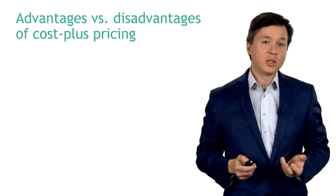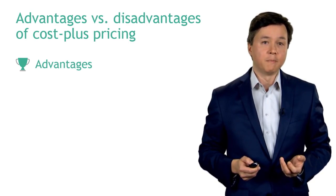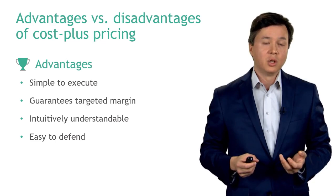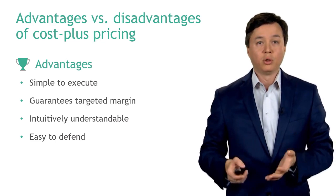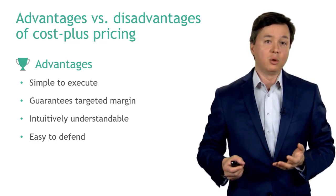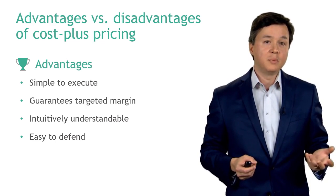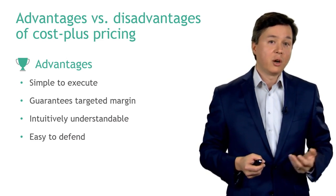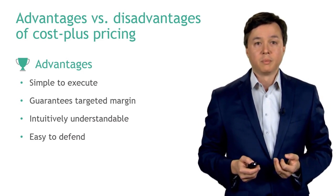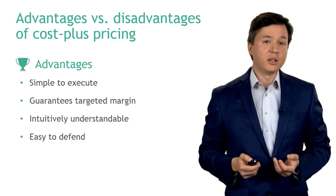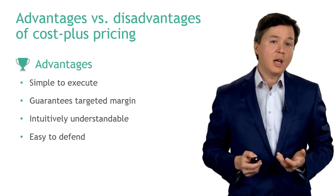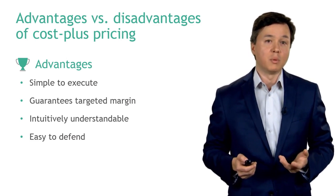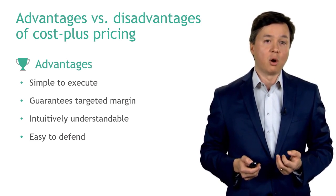There are advantages and disadvantages of cost plus pricing. The biggest advantage is it's very simple to execute — you take your full cost, add your expected margin, and you know your selling price. This also guarantees your targeted margin when you sell at that price. It is very intuitively understandable, and you can defend changes in your selling price quite easily to customers by pointing to changes in cost.